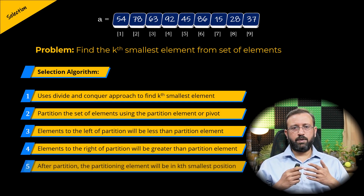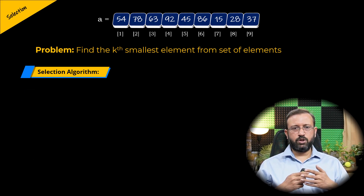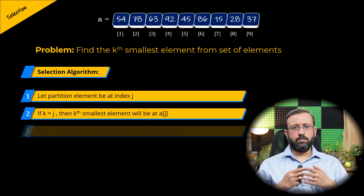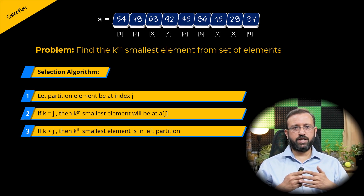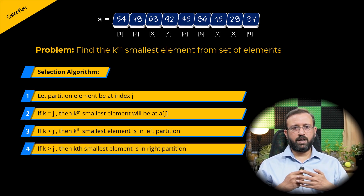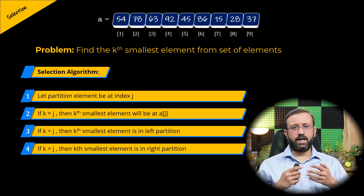After the partition, the partitioning element will be in its kth smallest position. So if j is the index of the partitioning element and is equal to k, then we found the kth smallest element, which will be at A of j. But if k is smaller than the partition index j, then the kth smallest element will be in the left partition. But if k is greater than the partition index j, then the kth smallest element will be in the right partition.